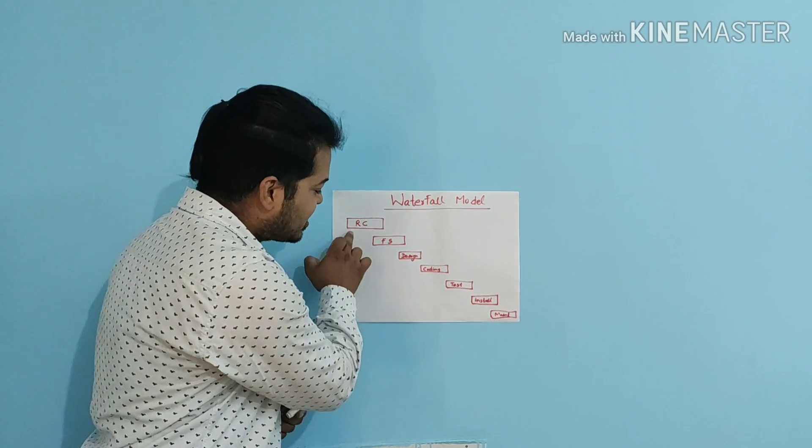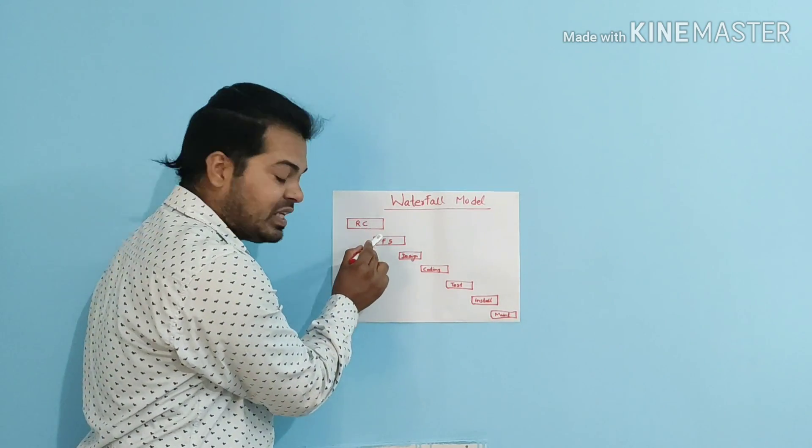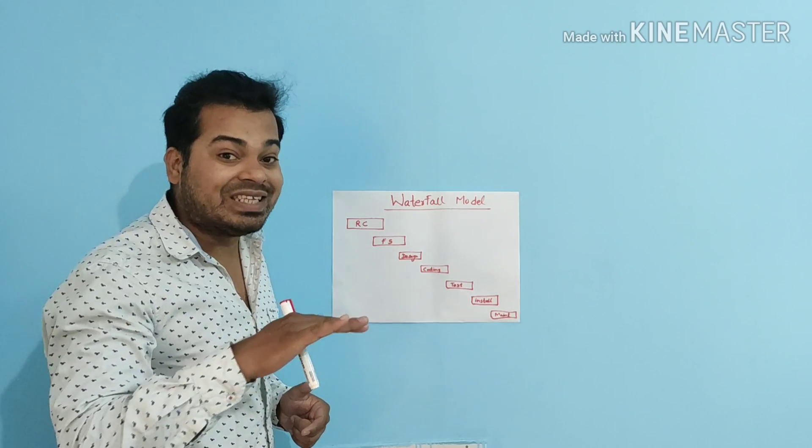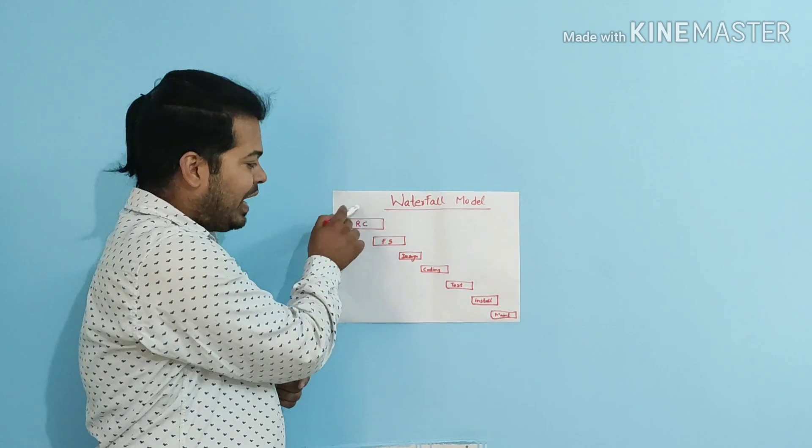These are the seven stages of the waterfall model. Waterfall model is a step-by-step or standard procedure to develop any new software. It is also called the basic model, the traditional model, and the sequential model. In the waterfall model, once requirement collection and feasibility study are done, the requirements will be frozen — you cannot go back and change the requirement.